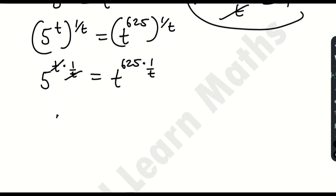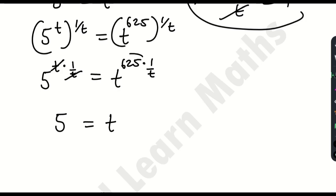The t cancels t on the left, leaving 5 raised to the power 1, which is just 5. On the right we get t raised to the power 625/t. But we have this 625 in the exponent which we don't want — we're trying to keep t together and the other numbers separate.